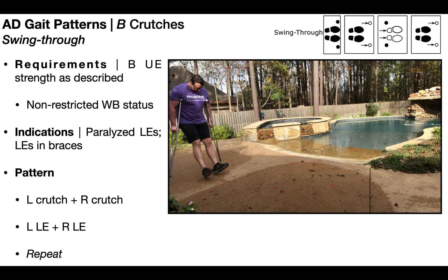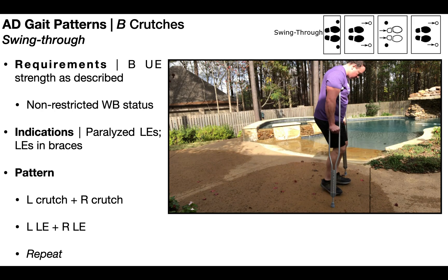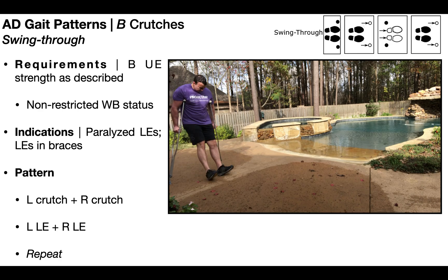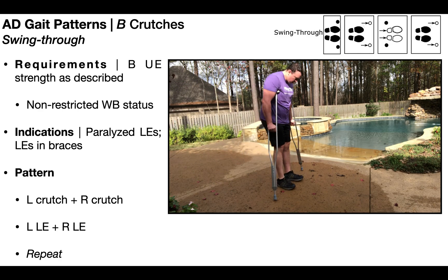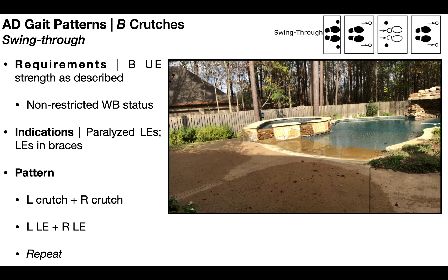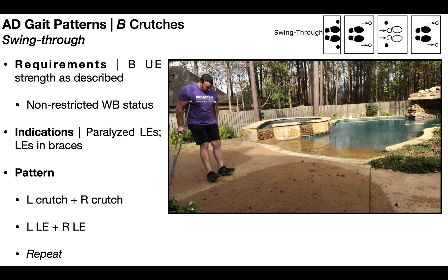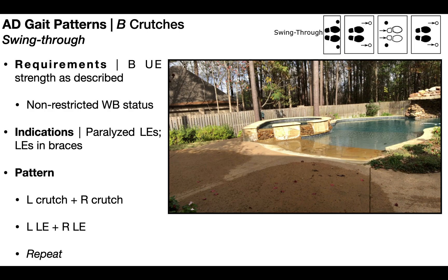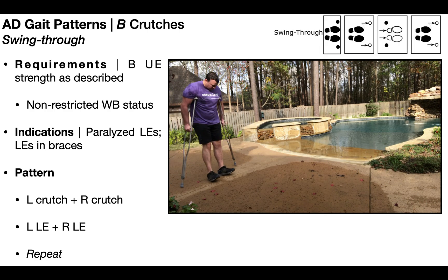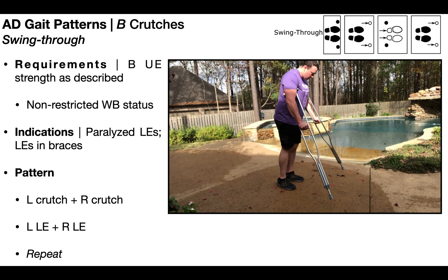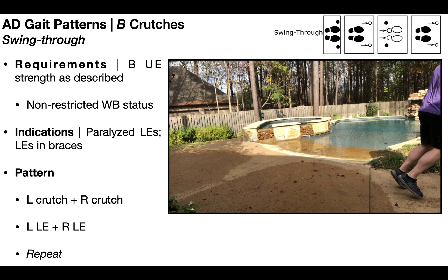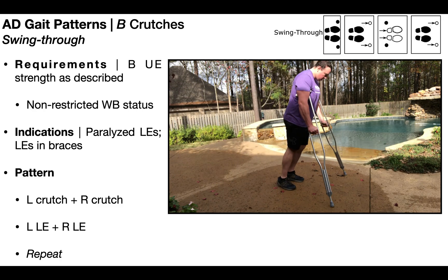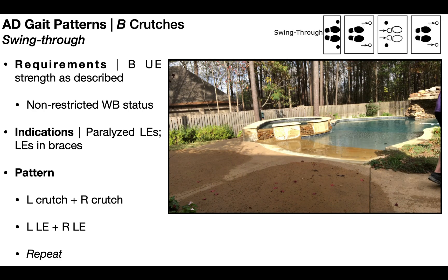Now let's take a look at the swing-through gait pattern. This has the same requirements and indications as the swing-to pattern and is almost identical in how it works. First, I'm advancing both crutches or assistive devices at the same time, and then advancing both legs at the same time. The major difference compared to the swing-to pattern is that now the legs are advancing beyond the point of the assistive devices — swinging through them — which is what gives this pattern its name.